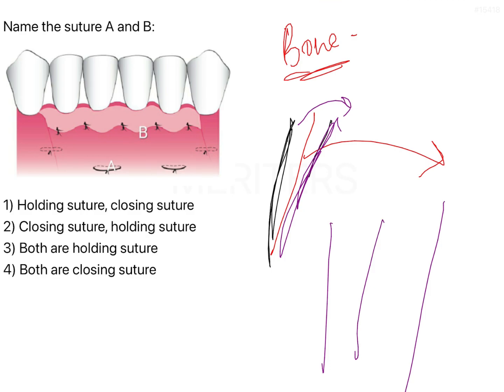In such situations, after placing the flap back, we need to ensure that the periosteum is very strongly adhered to the bone. When we ensure this strong adherence, we can be certain that the blood supply to the cortex of the bone is not going to be compromised, because the periosteum is one of the most important aspects of vascular supply to the bone.